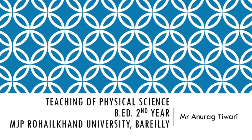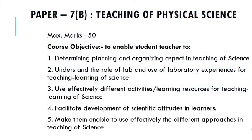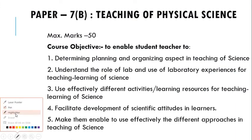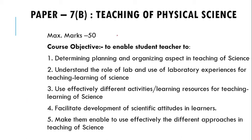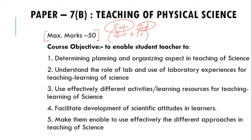Moving on, in this lecture video we will first learn what are the objectives of this paper and then we will move further to our topics. The teaching of physical science paper in your B.Ed secondary curriculum comprises a 40 plus 10 marks distribution — that is an external examination of 40 marks and internal assessment of 10 marks, same as your first year curriculum. The total gross marks will be 50.